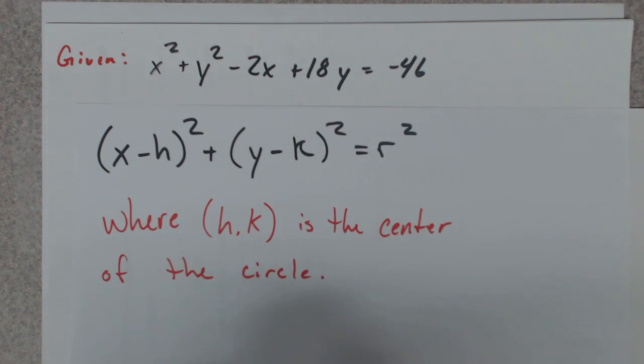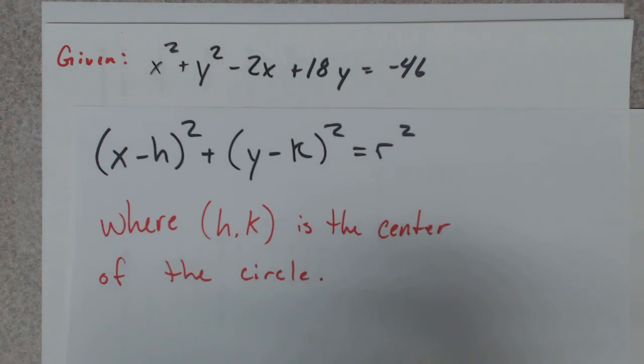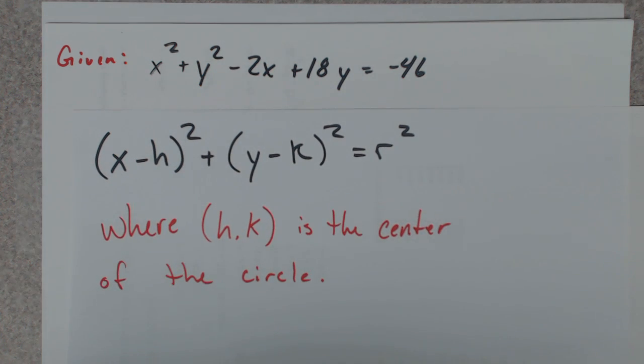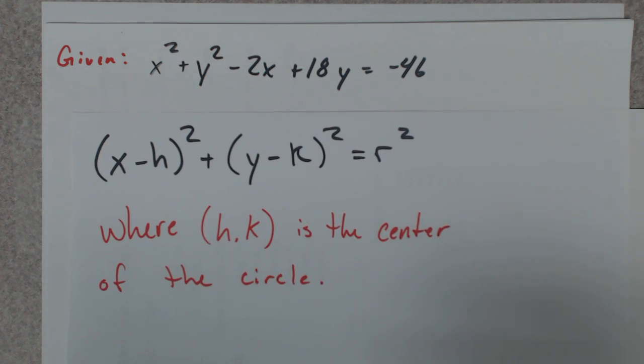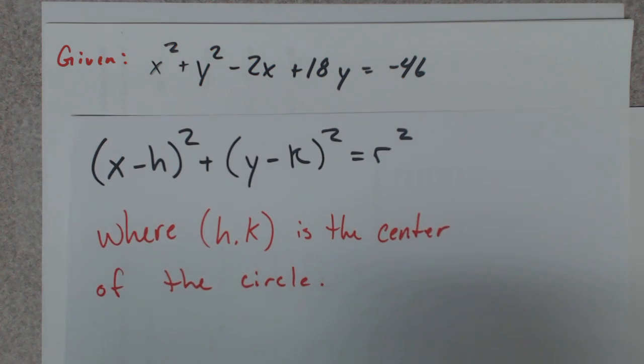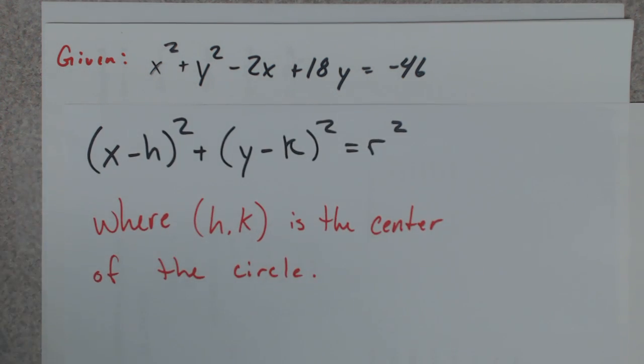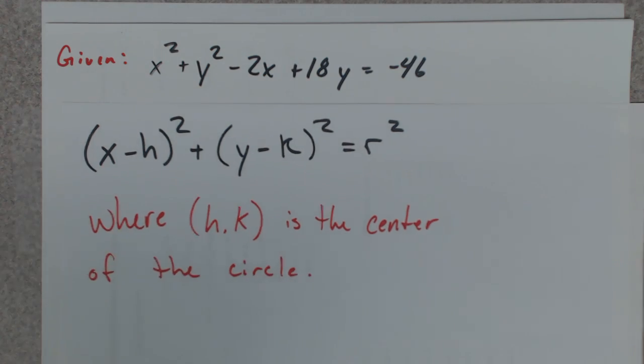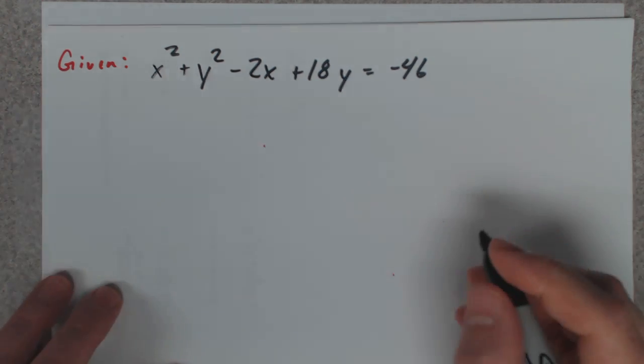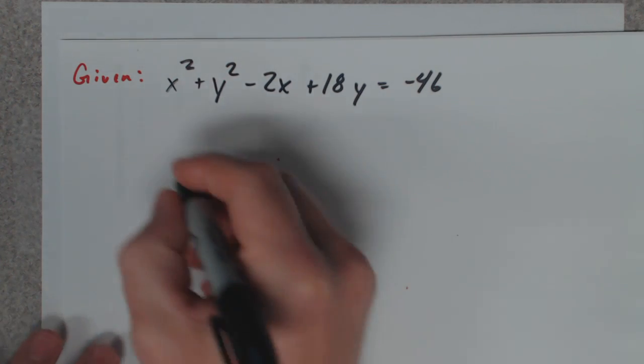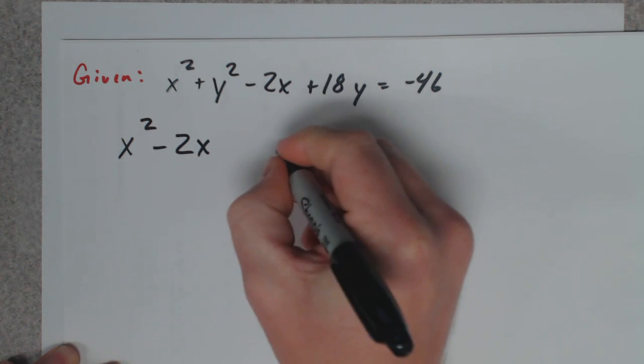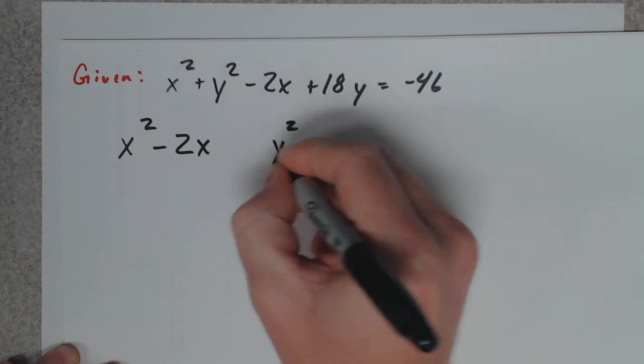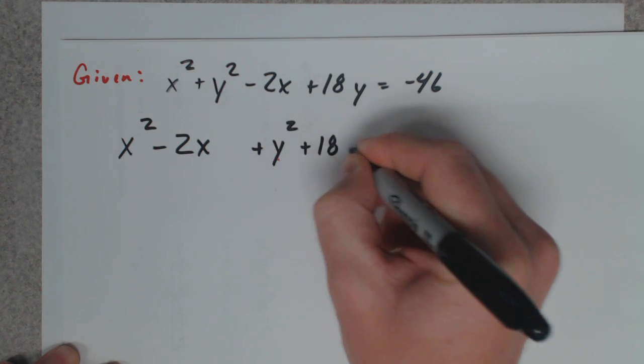We're going to use a method called completing the square. I have some videos about completing the square - you can search for those if needed. I'm going to do that method here without much explanation of why, but basically you divide by two, square it, and add to both sides. It's pretty easy, but it would be in your best benefit to figure out why by learning how completing the square works.